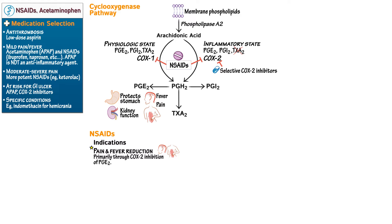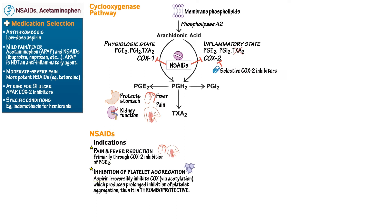NSAIDs inhibit platelet function. The clinical impact of these medications on platelets is much more complicated because of many competing factors. In short, aspirin irreversibly inhibits COX-1 via acetylation, which produces prolonged inhibition of platelet aggregation and is thromboprotective — it reduces thrombogenesis but increases bleeding risk. Whereas non-aspirin COX inhibitors, meaning NSAIDs and selective COX-2 inhibitors, produce reversible inhibition of shorter duration and are thrombogenic, promoting thrombotic events.